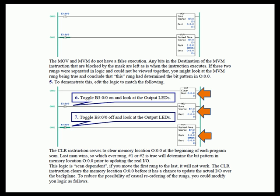If you were to move the Clear instruction to the bottom of the three rungs — so rung 0 was Move, rung 1 was Move with Mask, and rung 2 was Clear — it wouldn't matter which of the first two rungs was true. The very last execution every program scan would be Clear O:0.0, so the output would always be zero. This is called scan-dependent logic. If you move the rungs around it doesn't work the same. In the next slide we'll show how you might combine these instructions into one rung to reduce the possibility of this problem.